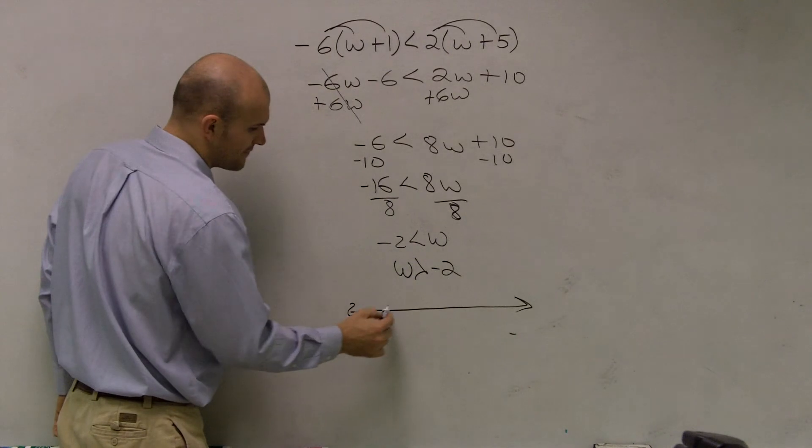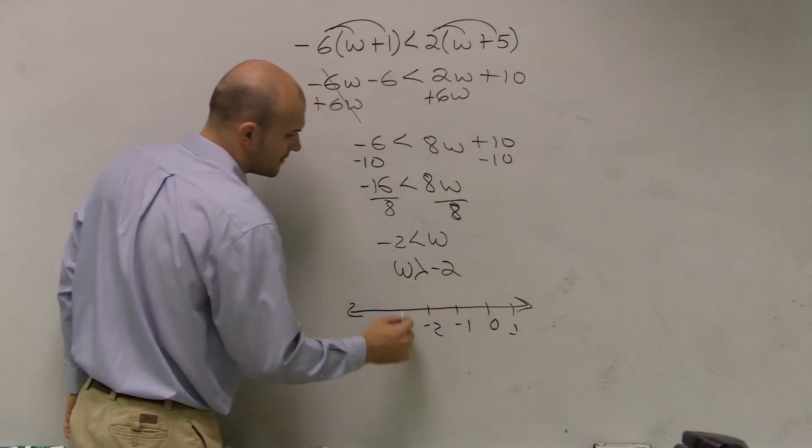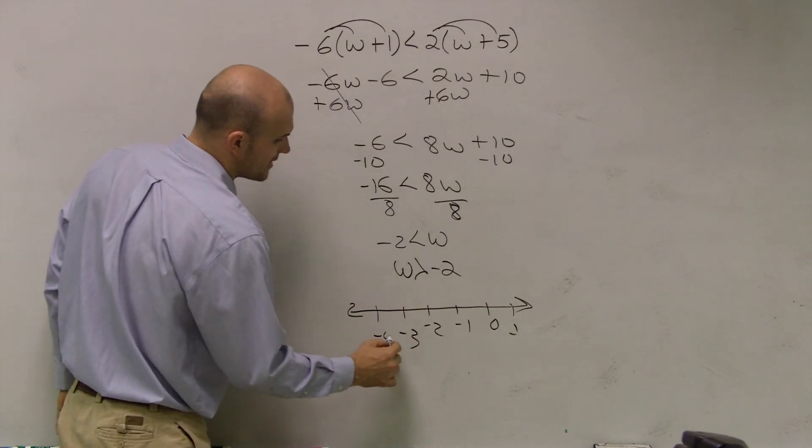So therefore, if I was going to graph this, and I was going to say, here's my point negative 2, negative 1, 0, 1, negative 3, negative 4. The first thing we do is we make a circle at negative 2.